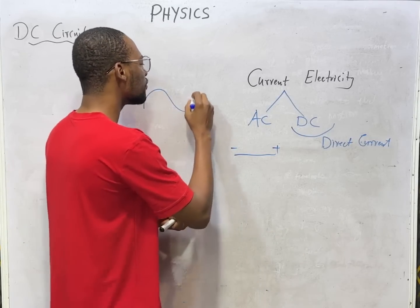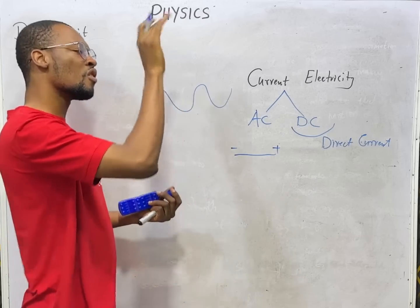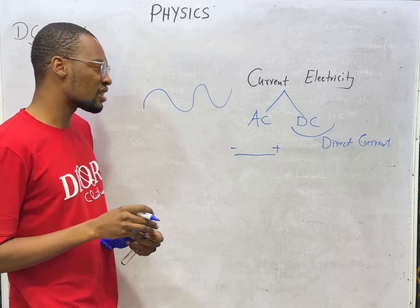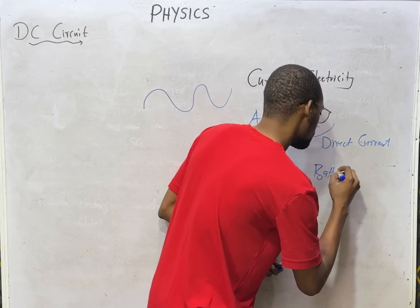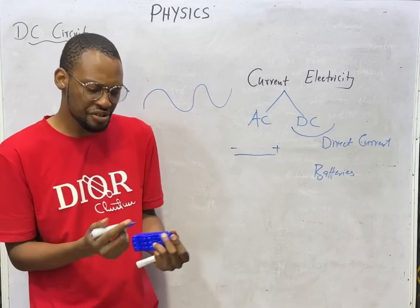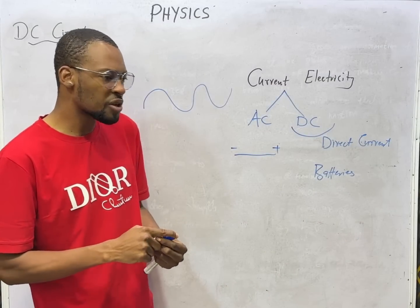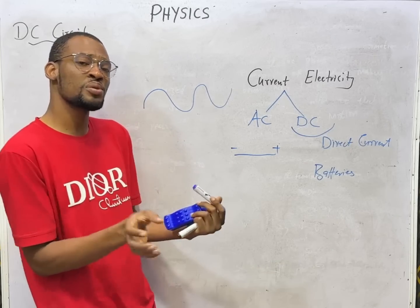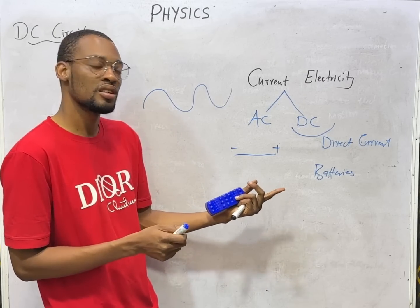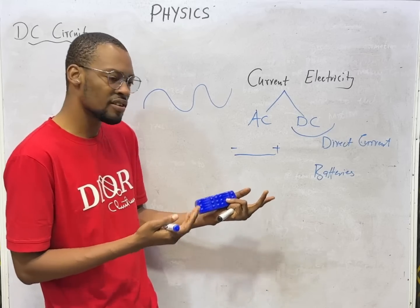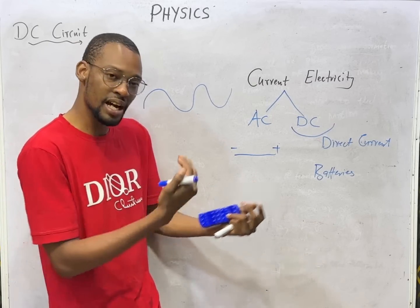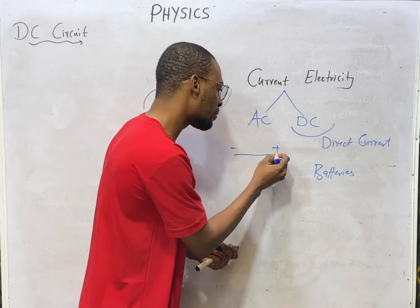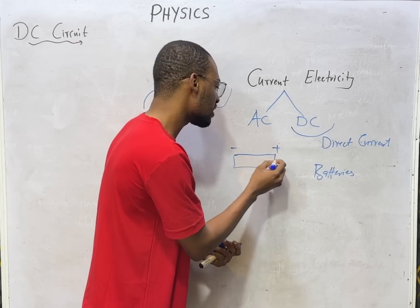Alternating current, on the other hand, changes direction of flow. The sources of direct current are batteries — your car battery, torch light battery, remote battery, even your phone battery. The current they produce is direct current; it does not change direction.